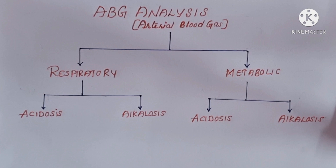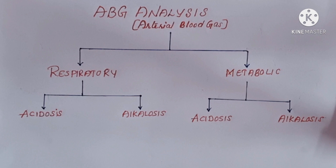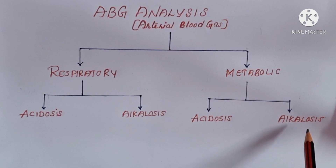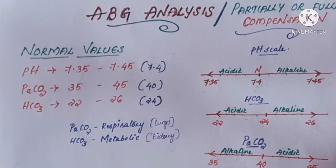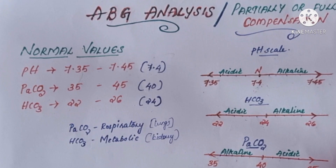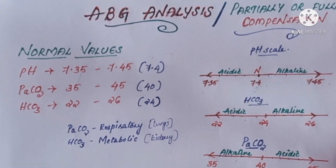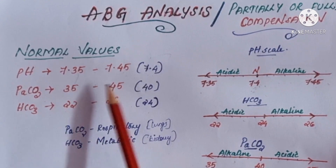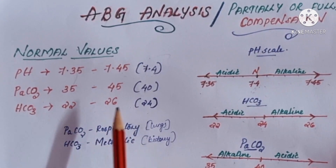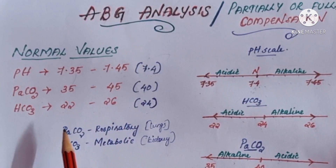Hello, today we are going to see how to analyze ABG easily with compensation. Through ABG or arterial blood gas analysis, we can identify four main conditions of the body — two are related to the lungs and two are related to the kidneys. They are respiratory acidosis and alkalosis, and metabolic acidosis and alkalosis. For identifying these, we need to know the normal values: pH is 7.35 to 7.45, PaCO2 is 35 to 45, and bicarb is 22 to 26.